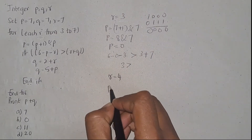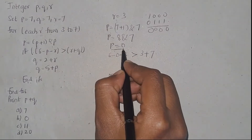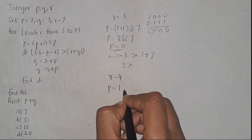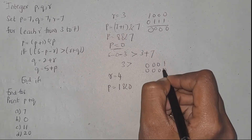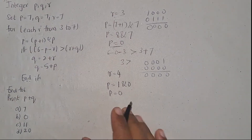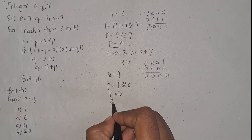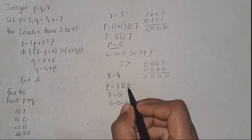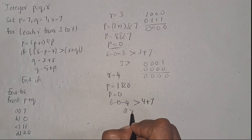p equals p plus 1, and p is 0, so 0 plus 1 is 1. Then 1 bitwise AND 0 gives 0 again, so p is 0. Check the condition: 6 minus 0 minus r where r is 4, is greater than 4 plus 7? This is false — end the if condition.